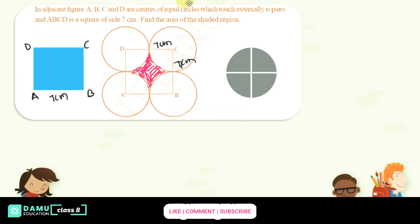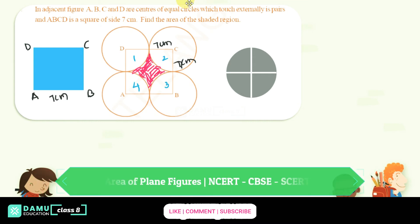From the square, we need to subtract these sector areas: 1, 2, 3, and 4. We take sectors 1, 2, 3, and 4 together, and they form one full circle.